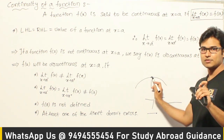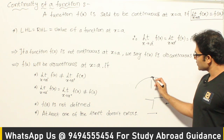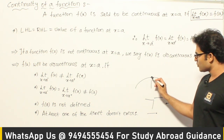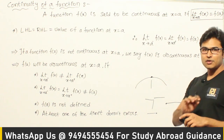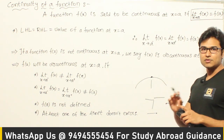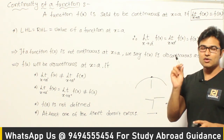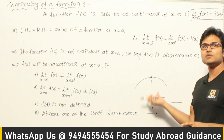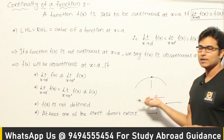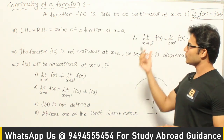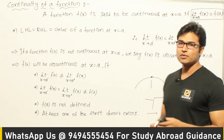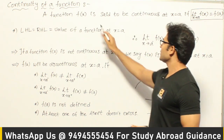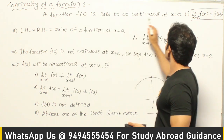So a function is said to be continuous at a point if it is not going to have any hole, or a cut, or any jump. That is the informal definition.